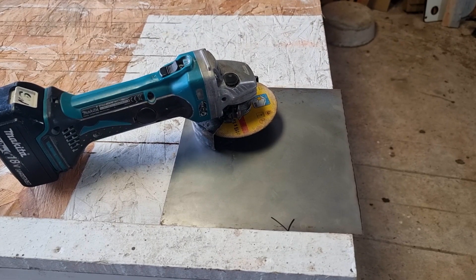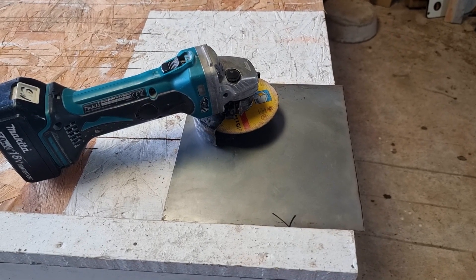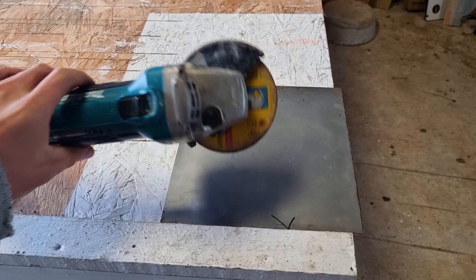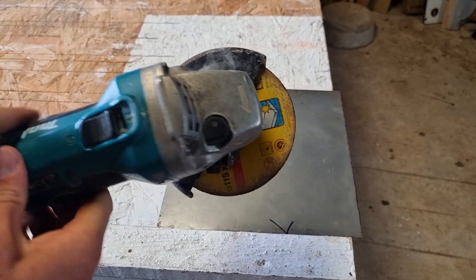In this video we're going to show you how to use an angle grinder to cut sheet metal. The first thing you need to do is make sure you've got a metal cutting disc in your angle grinder.